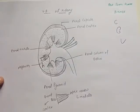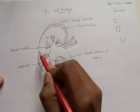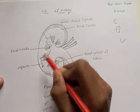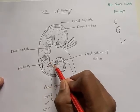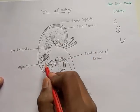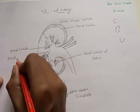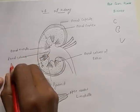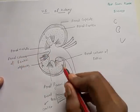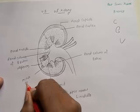Only a certain section belongs to the cortex, but some part of the cortex has entered into the medulla between the pyramids. The part of the cortex which has entered the medulla between the pyramids is called the renal column of Bertini.